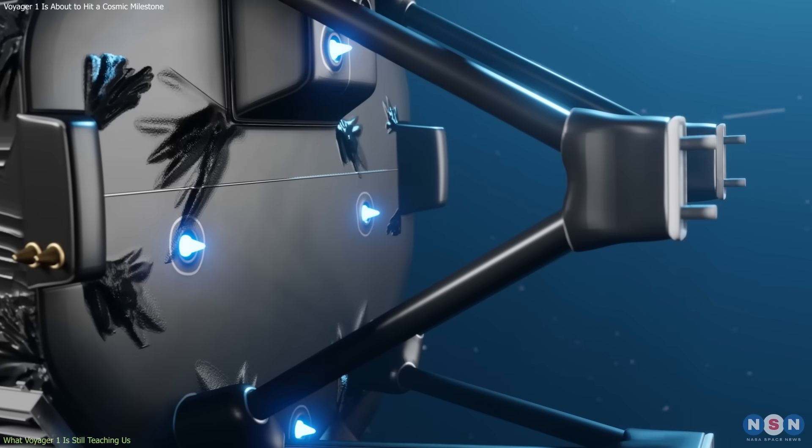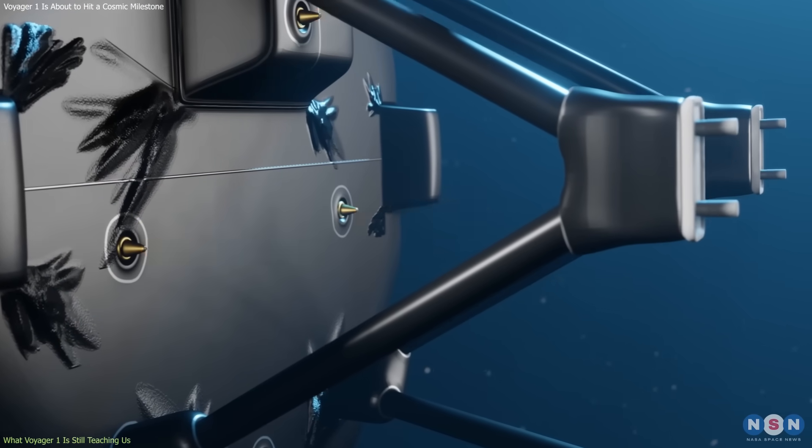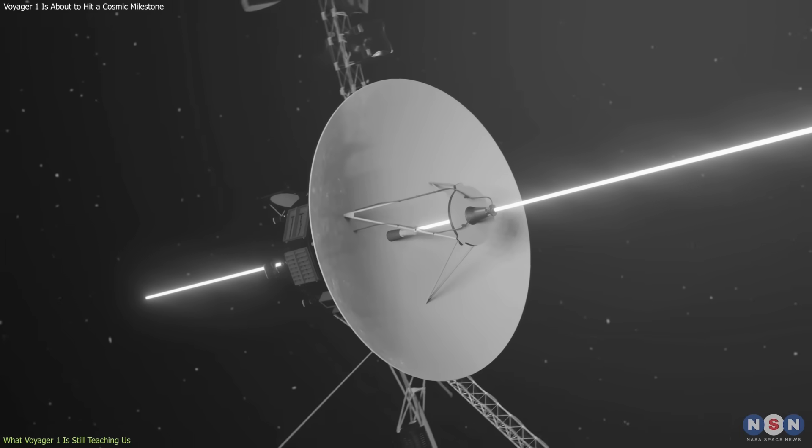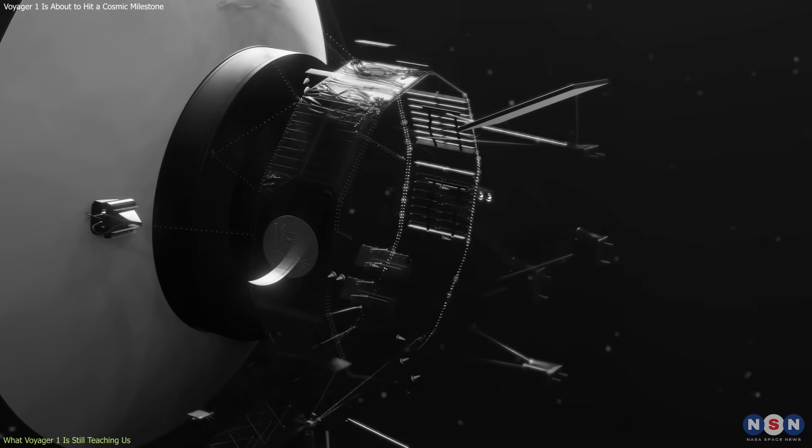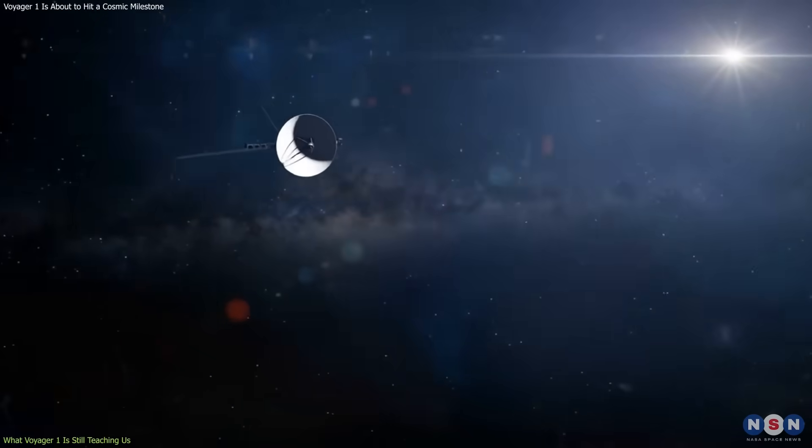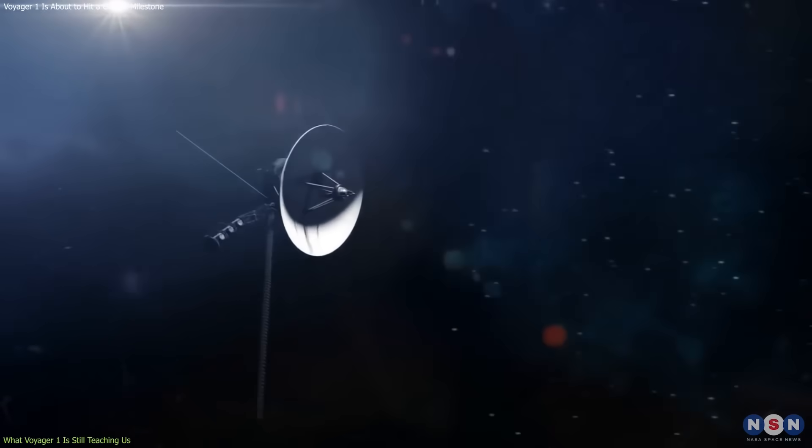In 2017, NASA reactivated backup thrusters that had been dormant since 1980 to correct the spacecraft's orientation. The maneuver succeeded at a distance of more than 15 billion miles and extended the mission's life by several years.